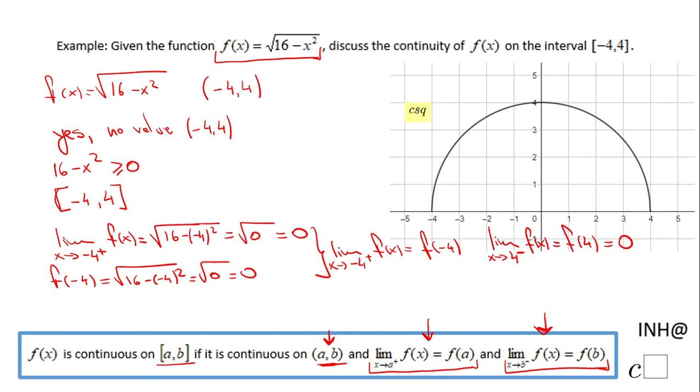This function is continuous from -4 to 4. Once more: the limit as I approach -4 from the right side (-4⁺) equals the value of the function. The limit as I approach from the left side of positive 4 (4⁻) equals the value of the function at 4.